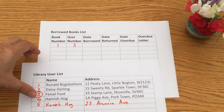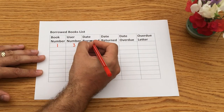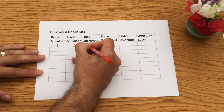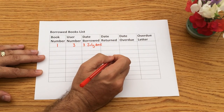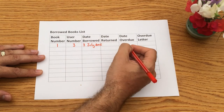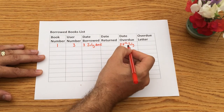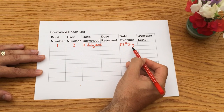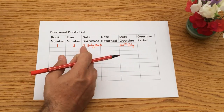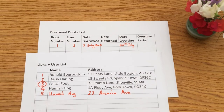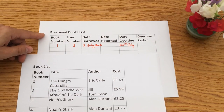The database would also fill in all the other information automatically when the book is scanned out. It can record the date the book was borrowed — say it's the 3rd of July 2015. It can't put the date returned yet because we haven't returned the book, but we can also set a return-by date — maybe the 28th of July. If that book doesn't come back by that time, the computer keeps track, and we can send an overdue letter. We look up user number three — that's Faisal — and see he borrowed book number one, The Hungry Caterpillar.